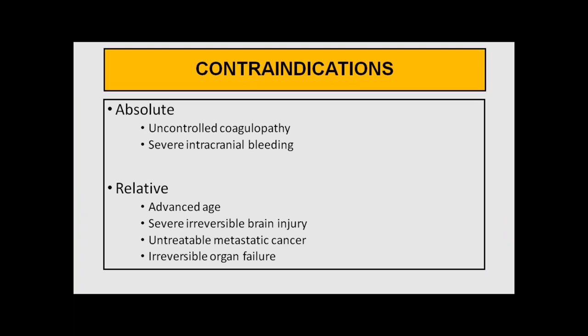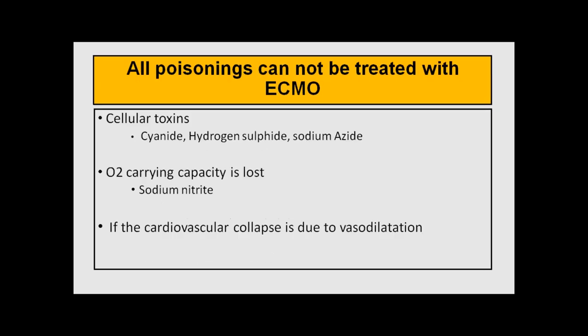There are certain contraindications specific to toxicology beyond the usual ECMO contraindications where ECMO should not be used as it will not be helpful. These include cellular toxins such as cyanide toxicity — though a recent single case report showed successful management of a cyanide-toxic patient on ECMO — hydrogen sulfide and sodium azide poisoning, situations where oxygen-carrying capacity is lost such as with sodium nitrite causing methemoglobinemia, or when the patient is severely vasodilated because of the toxin.